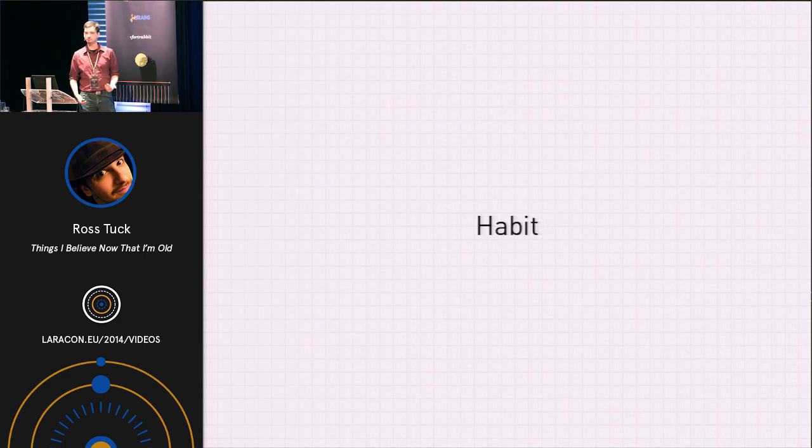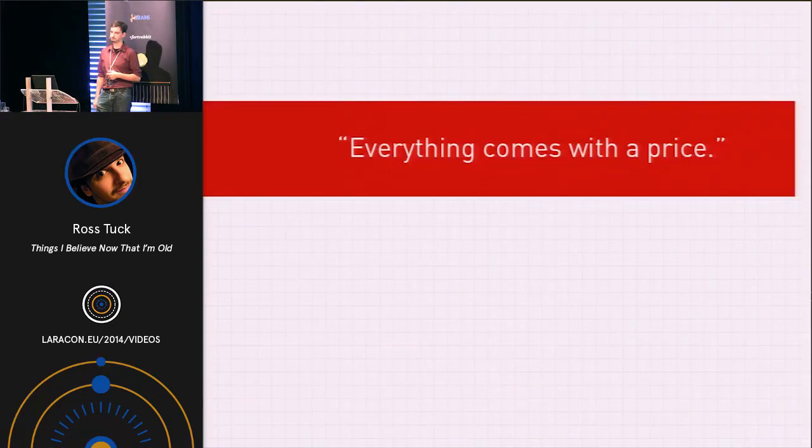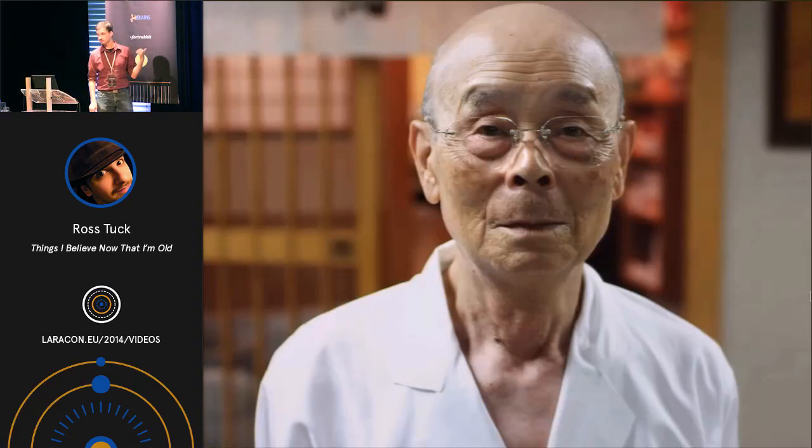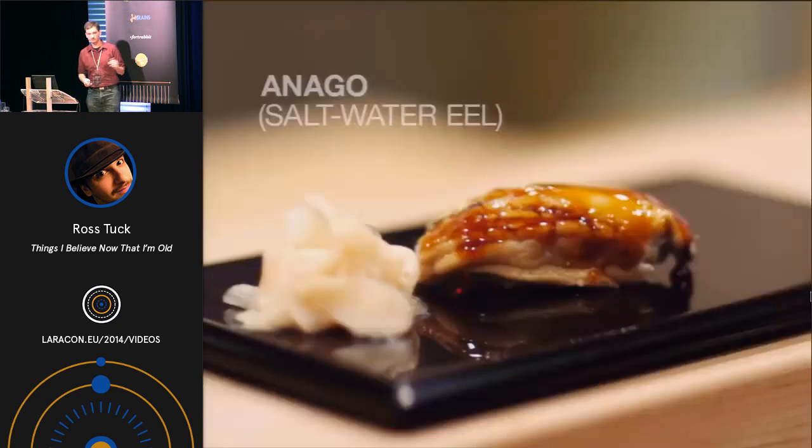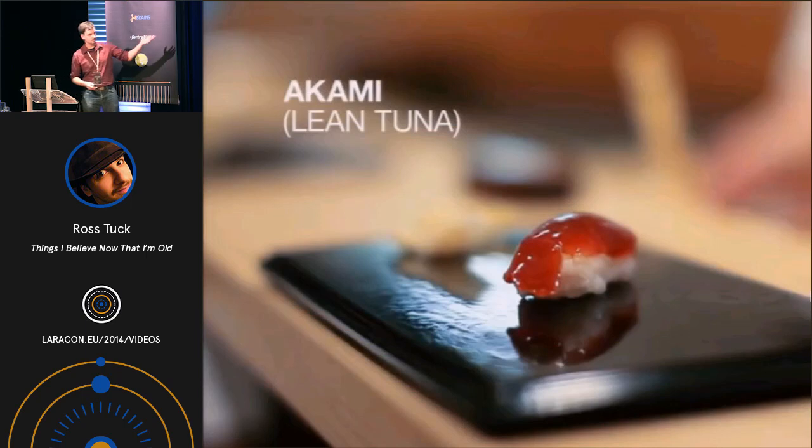But the reason it never becomes easy is because one of life's great lessons that we all have to learn sometime. Everything. Everything comes with a price. Does anybody know who this is? Yeah. The sushi guy from Jiro. This is Jiro Ono. Jiro owns a small sushi restaurant in the basement of a Tokyo subway station. He is widely considered to be the greatest sushi chef in the world. Maybe the greatest who's ever lived. He's a master craftsman.